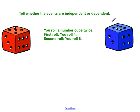But dependent would be like the sock situation that we just did, where you took one sock out. So the second pull is dependent on your first pull. So dependent just means that you're dependent on the first event. So you roll a number cube twice. The first roll is a four. So how many fours are on the cube? One. Out of how many sides? Six.